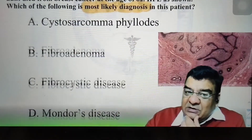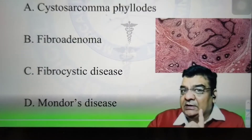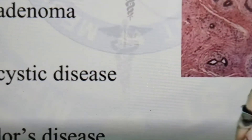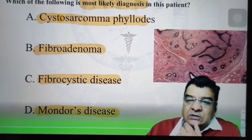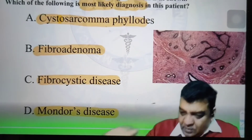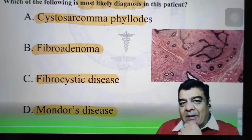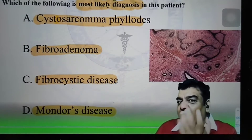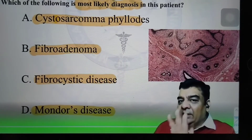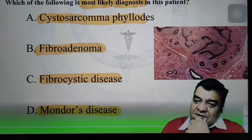Before I go there, let me just have a look at the options. I have not read the question. He is giving me options of Cystosarcoma Phylloides, Fibroadenoma, Fibrocystic disease, and Mondor's disease. That means, though I was not knowing anything about this image, but now at least I can understand that this image should be related to any of these four options. So I should focus on this.